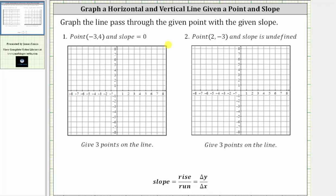We're asked to graph the line passing through the given point with the given slope. For number one, we are given the point negative three comma four and a slope of zero. Let's begin by plotting the given point of negative three comma four. From the origin, we move left three units and then up four units.